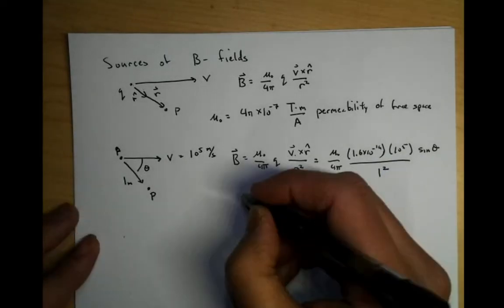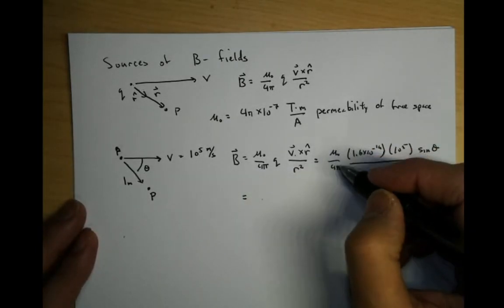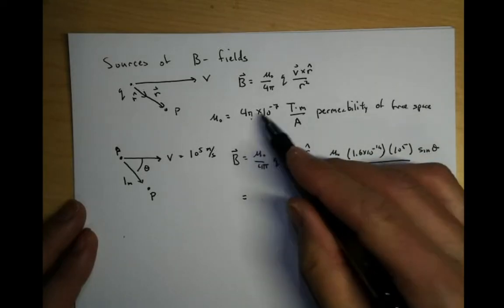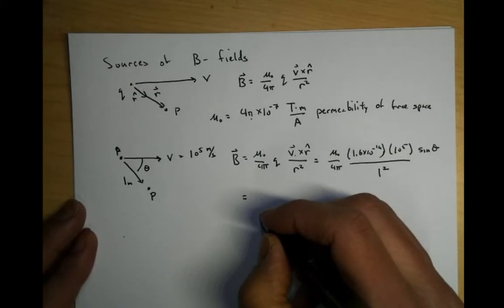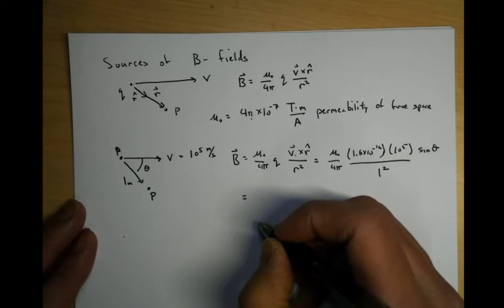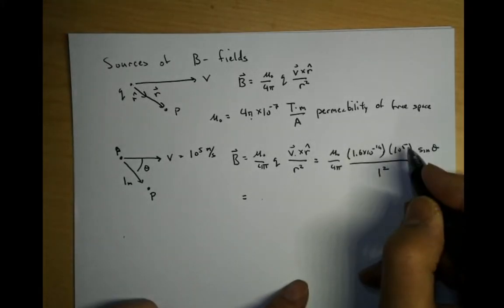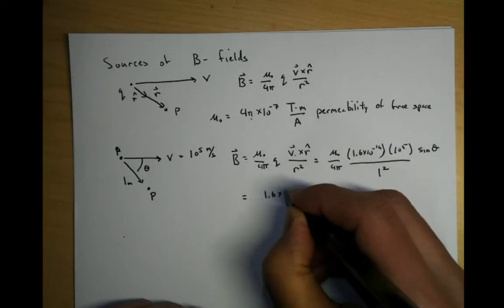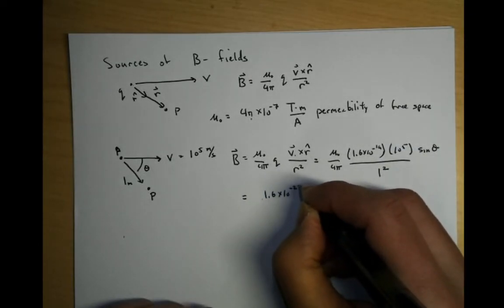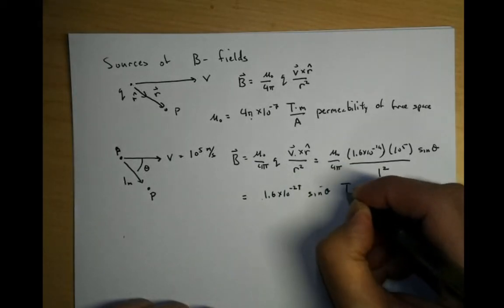If you go ahead and compute this: mu zero over four pi — the four pi cancels — it's 10 to the minus 7. There's 10 to the minus 7, 10 to the 5, 10 to the minus 19. So that's basically 1.6 times 10 to the minus 21 sine theta Tesla.